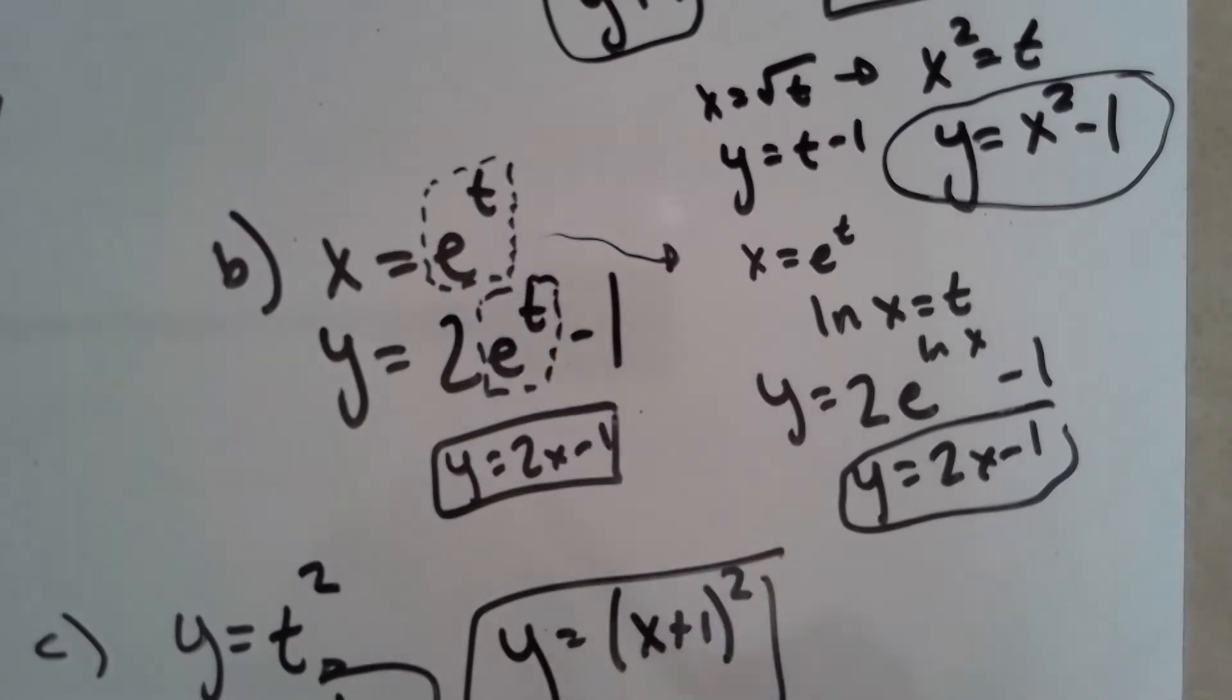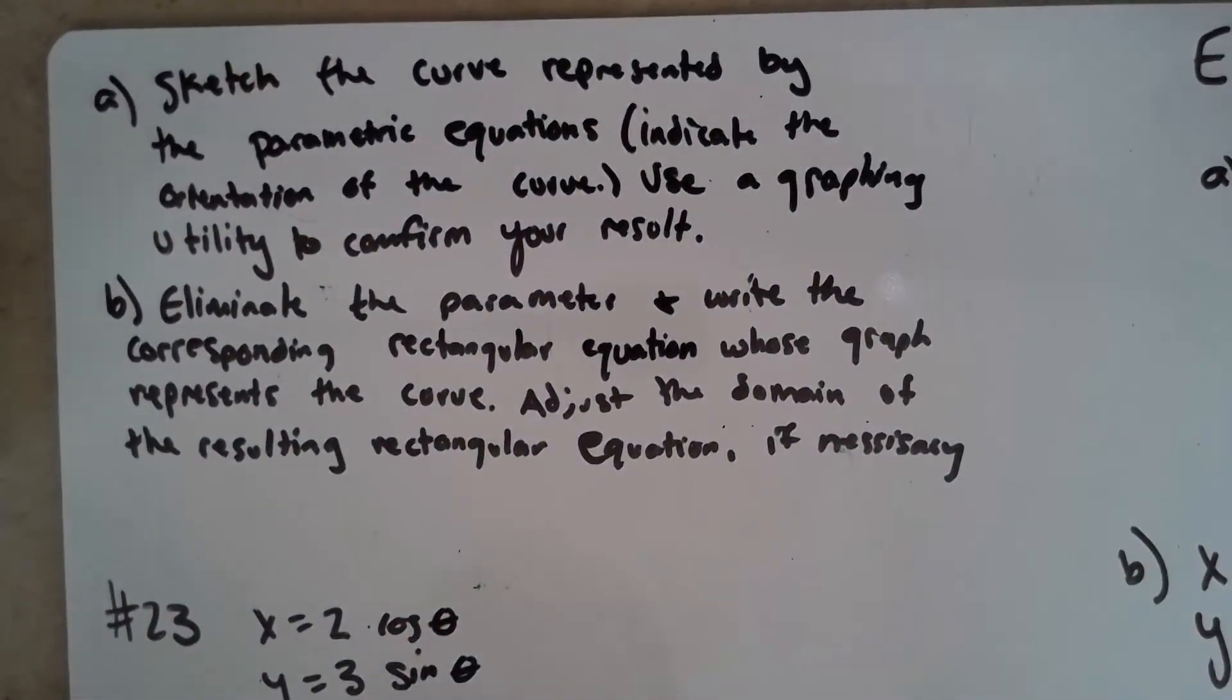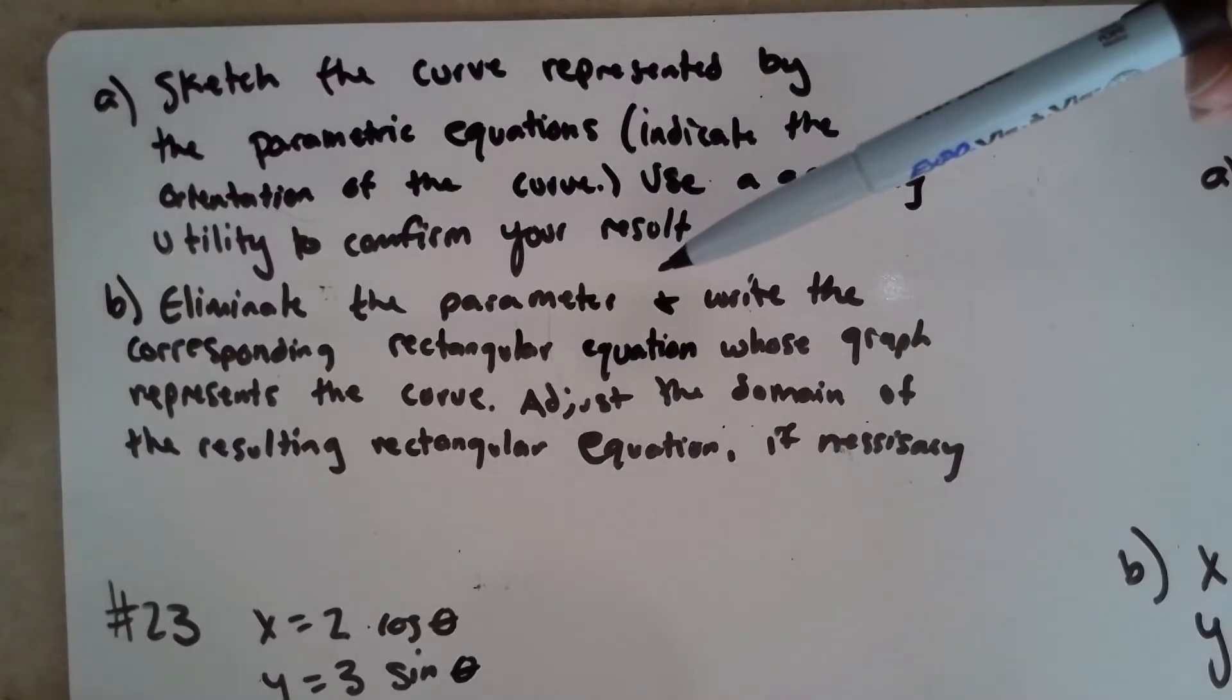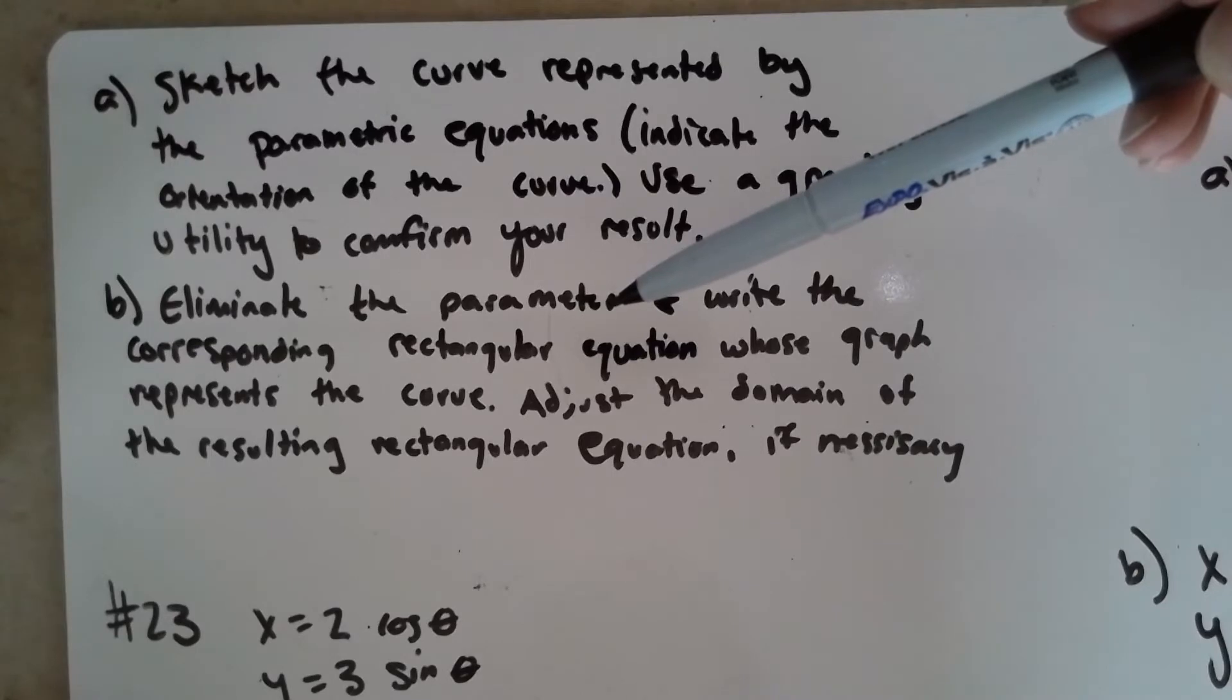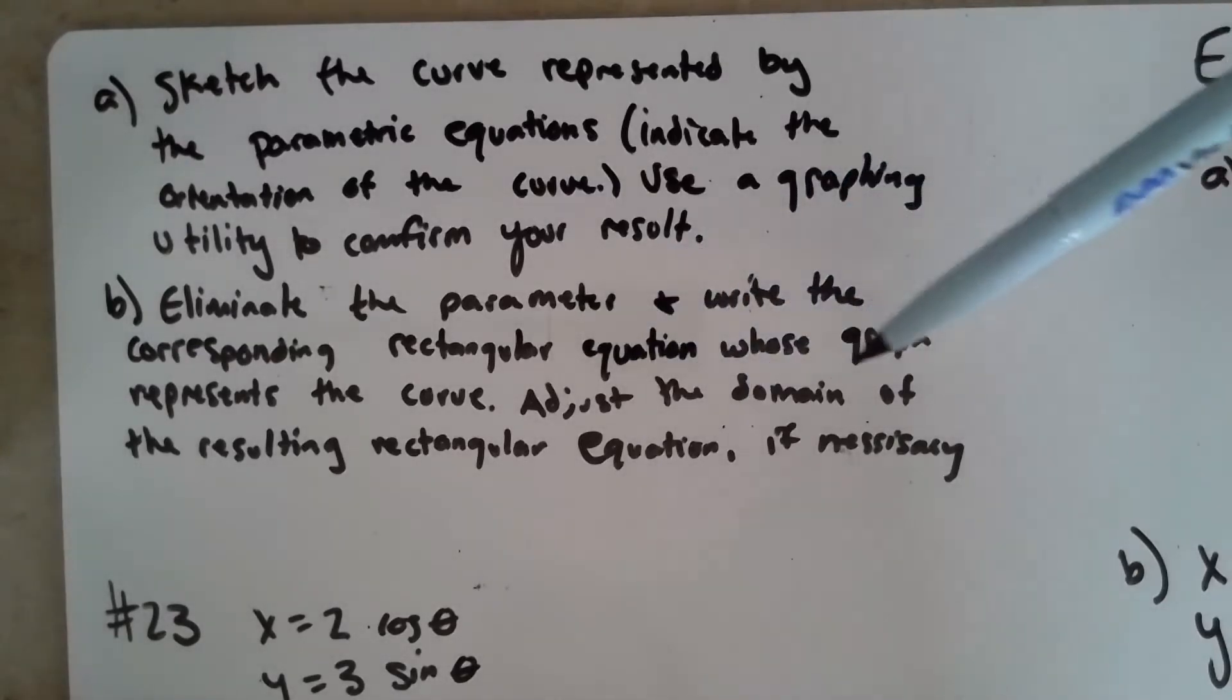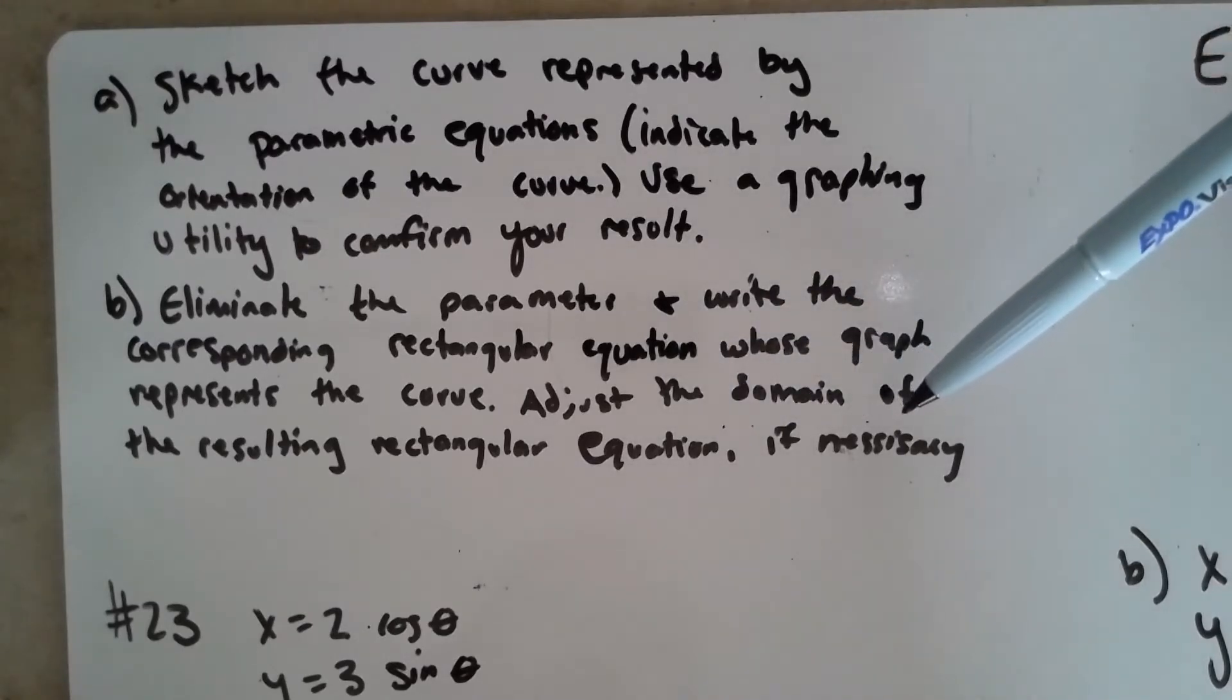Okay, I also want to look at this one. So these are the exact instructions from your assignment today. So sketch the curve represented by the parametric equation, indicate the orientation of the curve—so how it starts, how it ends, the direction—use a graphing utility to confirm your result, eliminate the parameter and write your corresponding rectangular equation whose graph represents the curve. So again, the rectangular just shows the shape; parametric shows shape, starting, ending, speed, all that. Okay, and then it's going to ask you to adjust the domain of the resulting rectangular equation if necessary.